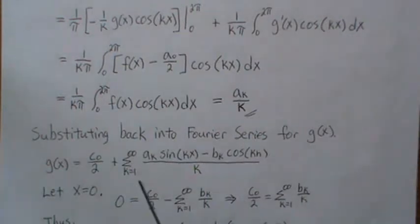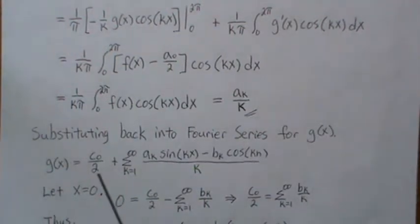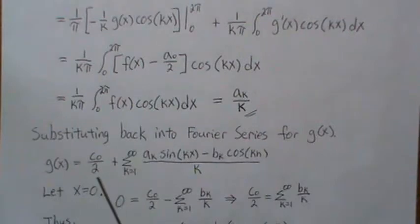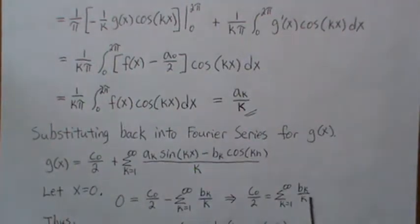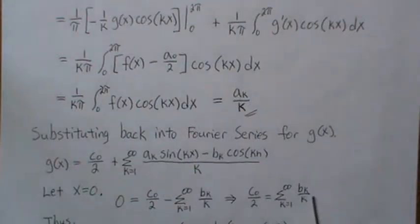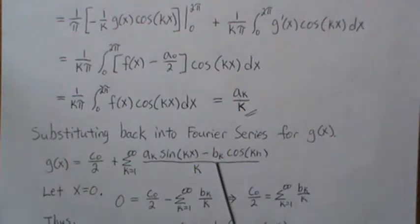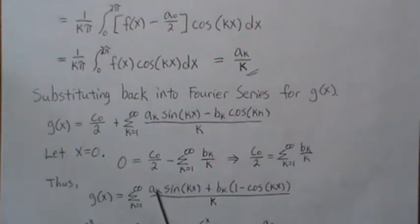So we can plug this into here. And they're both infinite sums, so we can combine them. And then we can group, well, and it's over k, so we can put it all over k. And then we can group these Bₖ constants together. And that's what we do here.